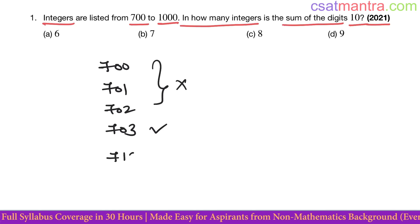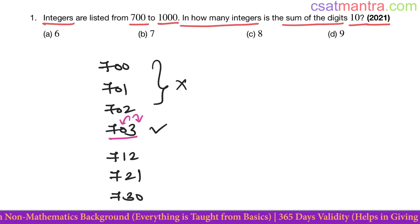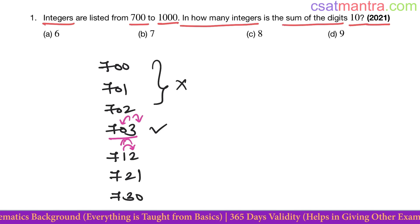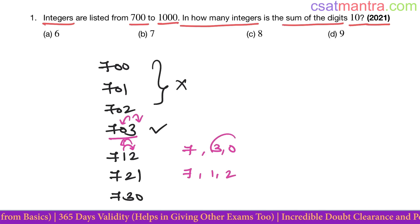Now you see 712, okay, 721, 730. You observe this pattern, okay? 703, you can shuffle 0 and 3, right? 712, you can shuffle 2 and 1, right? See, to have 10, you need to have 730 or 712. Here, two possibilities by shuffling 0 and 3. Here, two possibilities by shuffling 1 and 2.